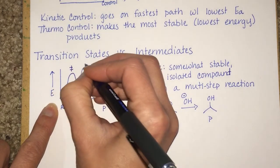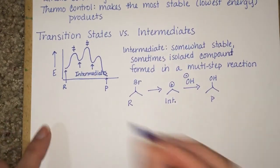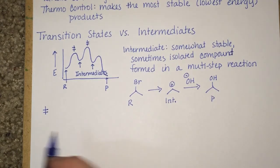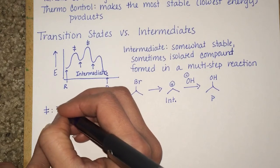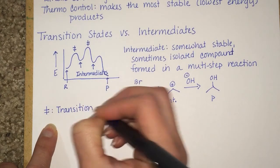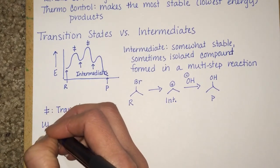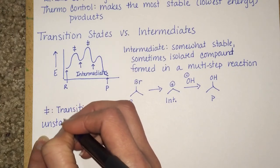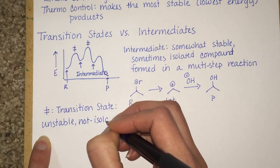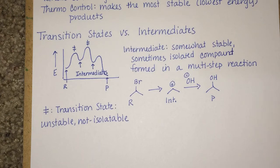These local maxima on this energy diagram are called transition states, which are given that notation that looks a lot like a Fischer projection. A transition state is just a straight-up unstable, not isolatable thing.